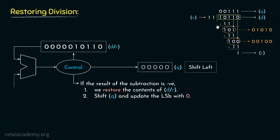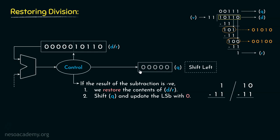Consider the division example. At the beginning, when we tried to subtract 11 from the 1-bit dividend 1, the result would have been negative. In that case, we restore and place 0 in the quotient. Again, when trying to subtract between 2 and 3 using the next 2 bits of the dividend, the result would again be negative, requiring restoration and placing another 0. In the Q register, we perform a left shift and the LSB is updated with 0 whenever the subtraction result is negative.